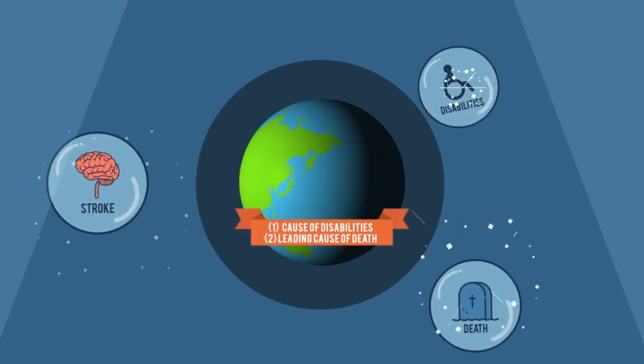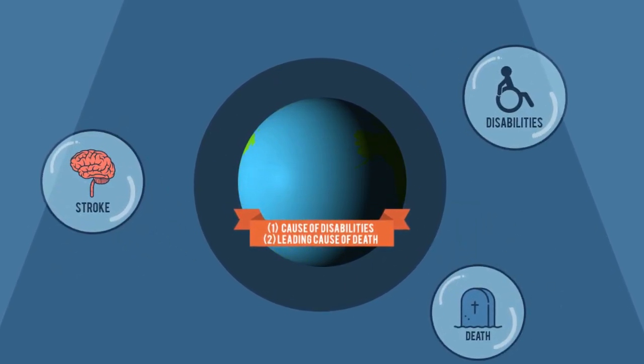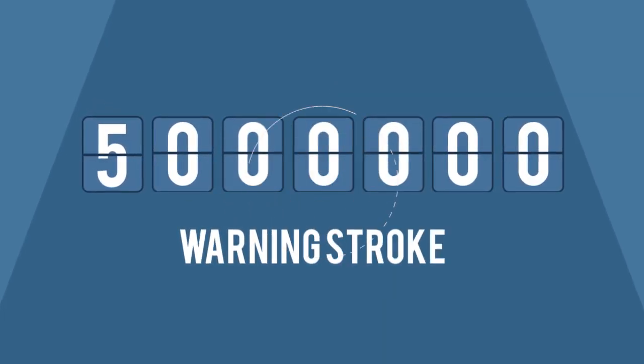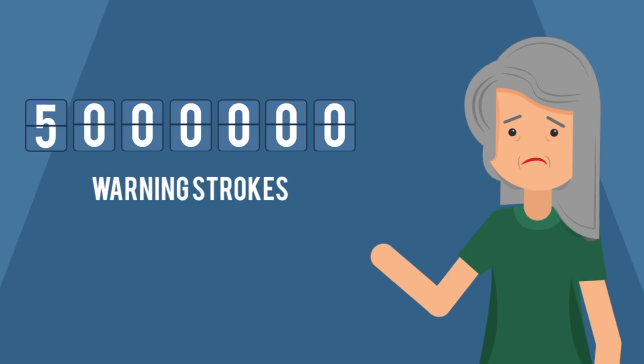Stroke is the second leading cause of death and the number one cause of disabilities in the world. There are five million warning strokes in the world every year, similar to the one Anna's husband had.